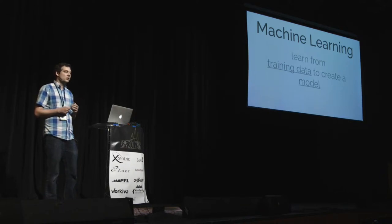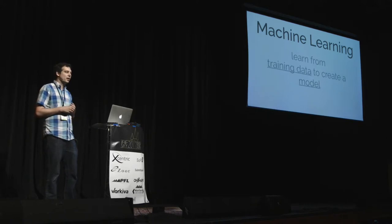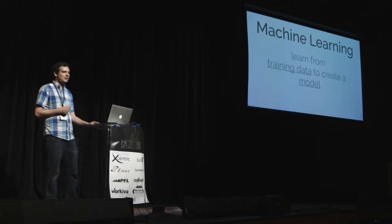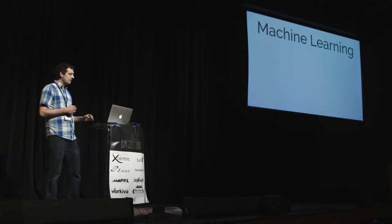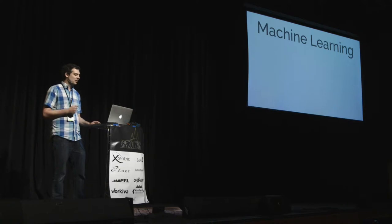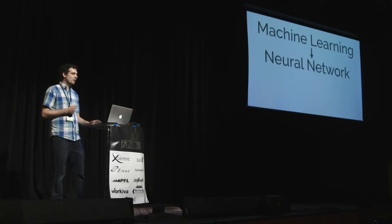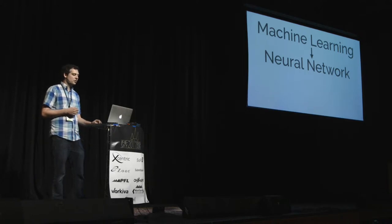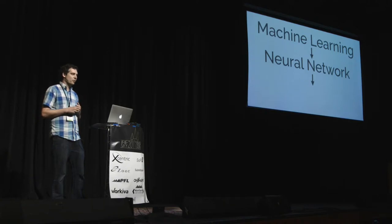Once you have that model, you can give it new examples of data that it's never seen before, and if it works, it'll create a prediction — tell you what it's looking at, tell you what you should do, things like that. So there's this hierarchy in machine learning. Machine learning is a big set of algorithms. And specifically today I want to talk about neural networks. And within neural networks, you've probably heard the term deep learning — that's typically referring to a deep neural network.